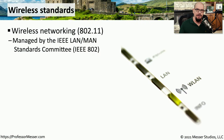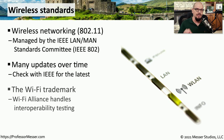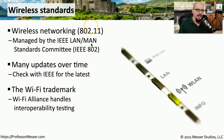When we talk about using a wireless network today, we're often talking about one that follows the IEEE LAN standard from the 802.11 Standards Committee. This committee is in charge of maintaining all of the standards for wireless communication on our local area networks, and they create new versions of these standards all the time. If you see the trademark that says Wi-Fi, we are referring specifically to these 802.11 standards, and the Wi-Fi Alliance is a group that handles the interoperability testing for all of the devices that need to connect to an 802.11 network.